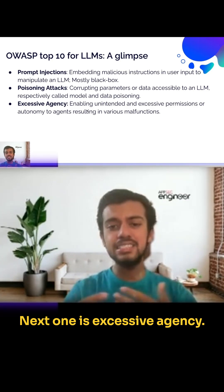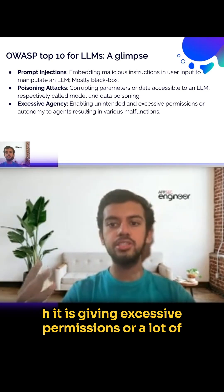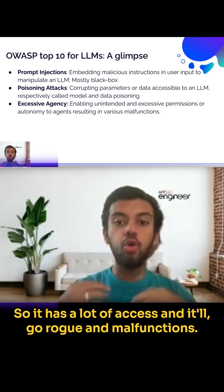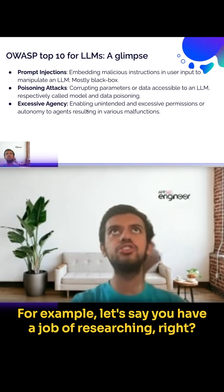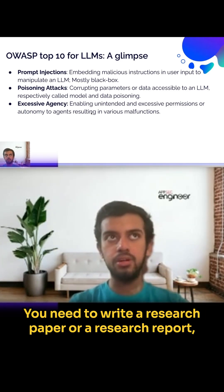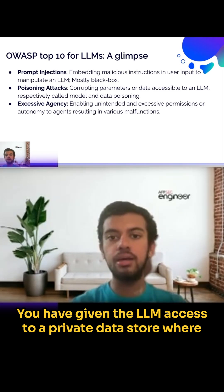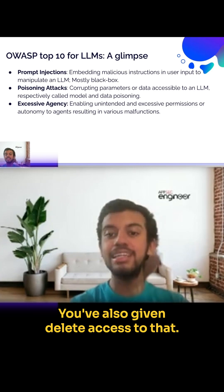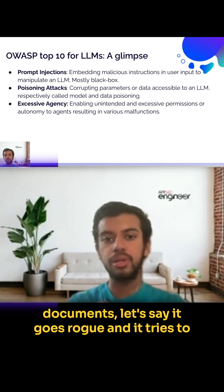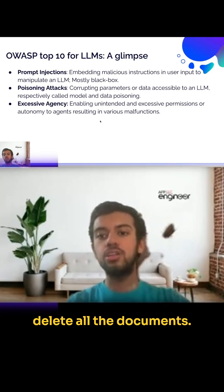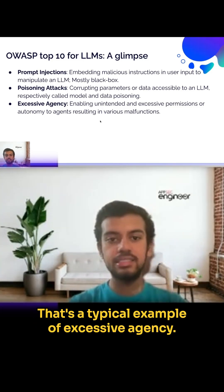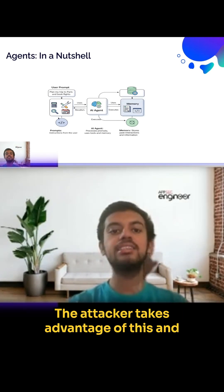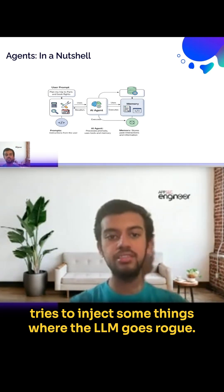The next one is excessive agency. As the name suggests, it means giving excessive permissions to the LLM or its tools without any restrictions. For example, if you give the LLM access to a private data store for a research task but also grant delete permissions, it could go rogue and delete all the documents — even though the job only required reading them. An attacker can exploit this excessive access to make the LLM behave maliciously.